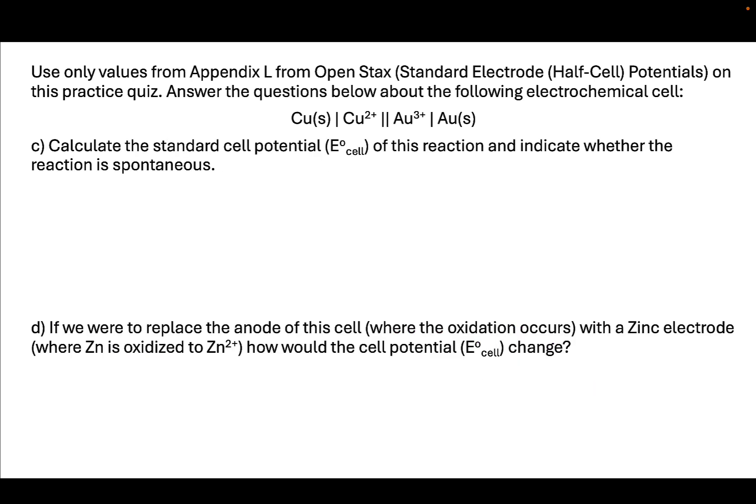For the next part of the quiz, we want to calculate the standard cell potentials. We have this notation for our electrochemical cell—we want to know what is the potential of this cell, or how much voltage do electrons feel as they go from one side to the other, and indicate whether it's spontaneous, meaning the electrons will go automatically by themselves, or that we would need to apply a voltage to get it to occur.